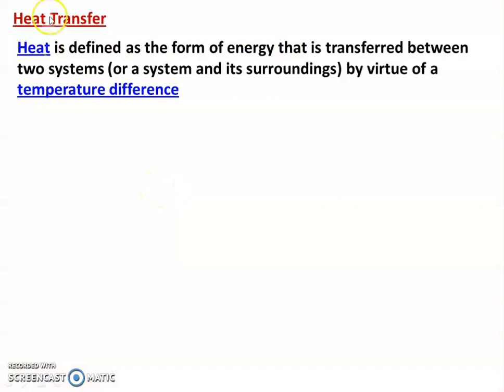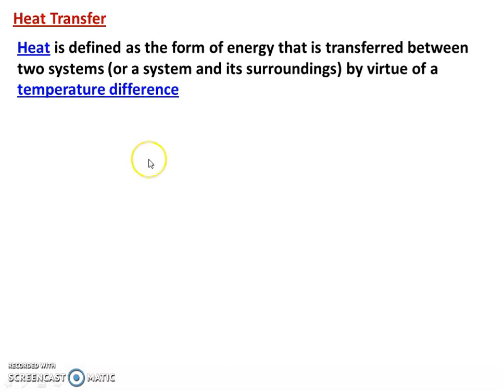Heat transfer. Heat is defined as a form of energy that is transferred between two systems by virtue of temperature difference. For example, hot tea at temperature 70 degrees Celsius, atmosphere temperature 30 degrees Celsius — the temperature of the tea will decrease. The reason is heat transfer; heat is transferred from the tea to the surrounding atmosphere because of the temperature difference.